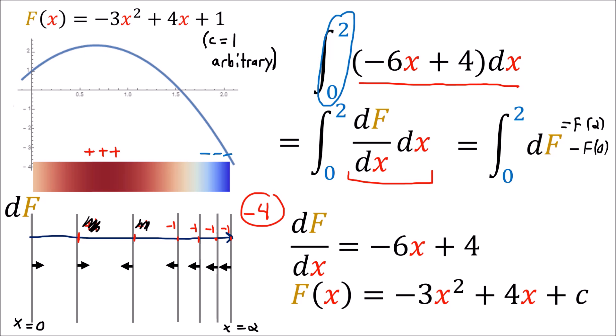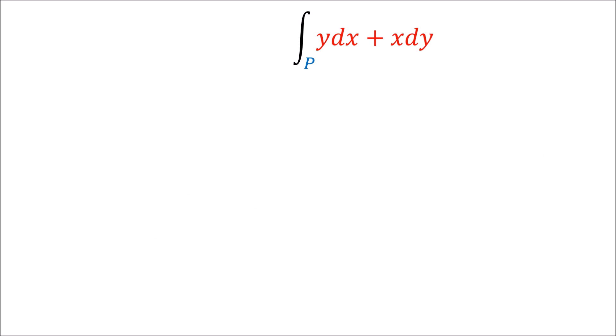So the answer we get by taking a path and counting how many contour curves it pierces is the same answer we get by looking at the area underneath the curve.